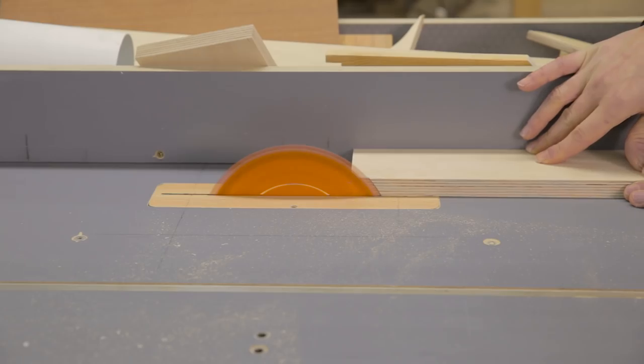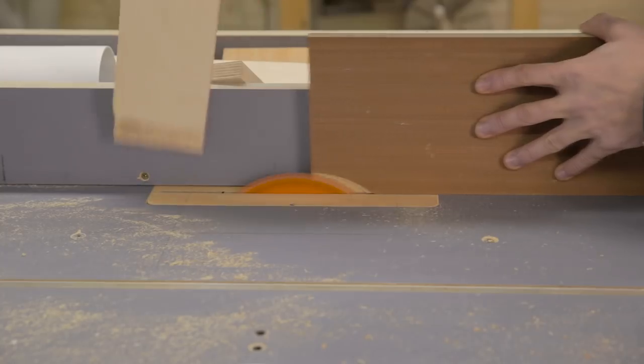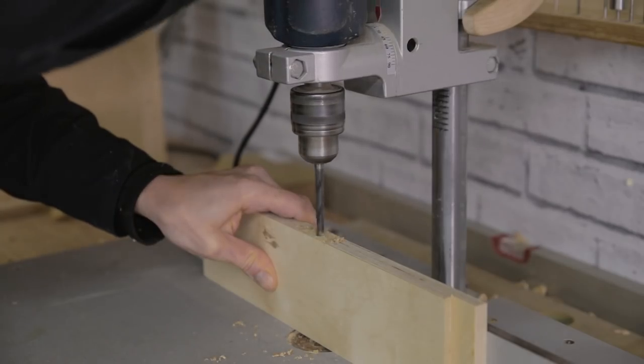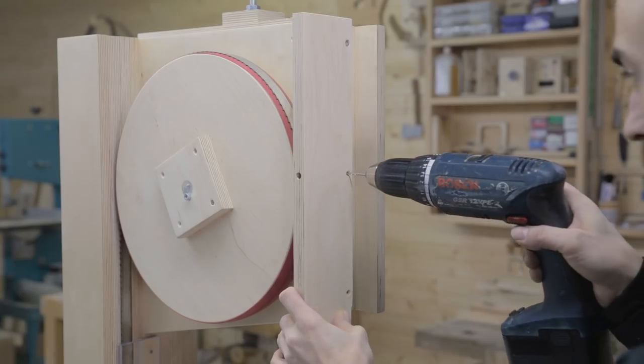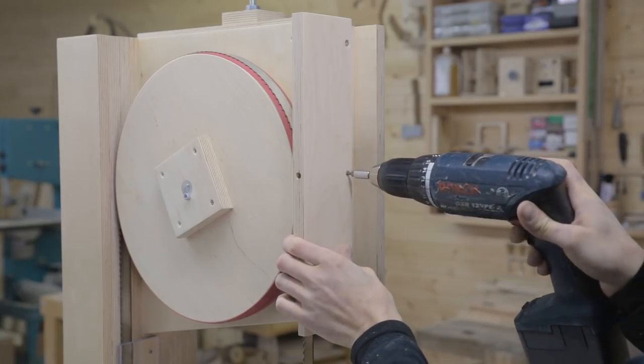I make some rebates with the table saw so that I can lift the upper guide post all the way up, as well as this hole which will allow me to lock the door. Now I can screw it onto the saw.